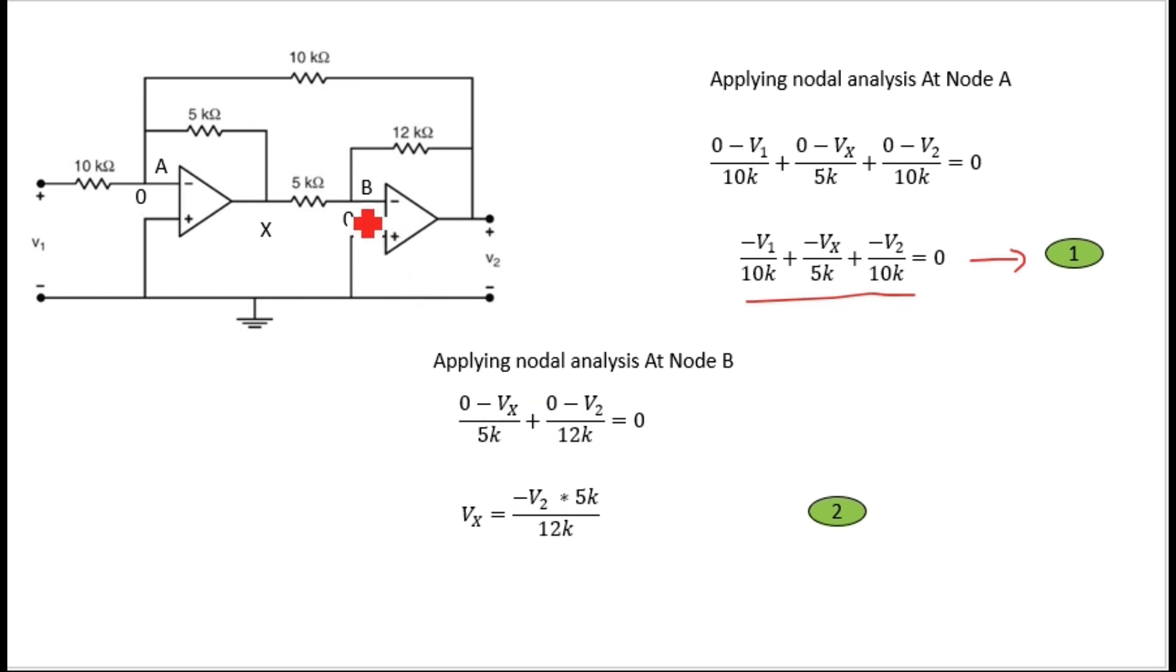Applying nodal analysis at node B. Vb is zero, so zero minus Vx divided by 5k first term, zero minus V2 divided by 12k. So here Vx equals minus V2 multiplied with 5k divided by 12k. This is expression number two. You can also apply non-inverting formula for these types of questions, but nodal analysis has less possibility of error, so I am using that one.